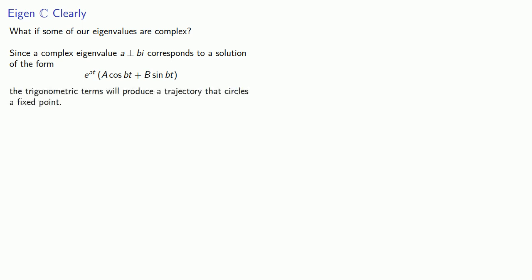What if some of our eigenvalues are complex? Since a complex eigenvalue a plus or minus bi corresponds to a solution of the form e to the power at times (a cosine bt plus b sine bt), the trigonometric terms will produce a trajectory that circles a fixed point.